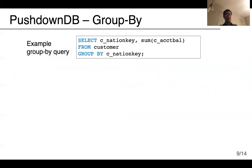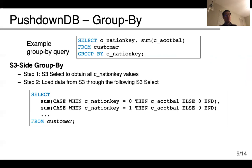Next, we discuss how PushdownDB supports group-by using S3 Select, using an example query that reports the sum of account balance for each nation. For the baseline implementation, the table is simply loaded to the compute node where the entire query processing is done. One way to exploit S3 Select is to push the entire group-by operation to S3 in two steps. In step one, we use a simple S3 Select query to obtain all the C_nation_key column, which is the grouping column, and unique values are extracted. Then in step two, we use an S3 Select query with case statements to perform remote aggregation, since S3 Select does not support group-by.